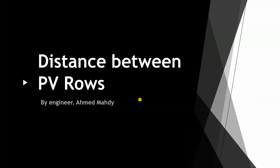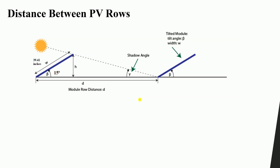Welcome everyone. In this lesson we will talk about the distance between PV or solar panel rows. As we mentioned before, each row of panels requires a distance between them to avoid the shading effect. This distance is approximately three to four times the height of the panel.